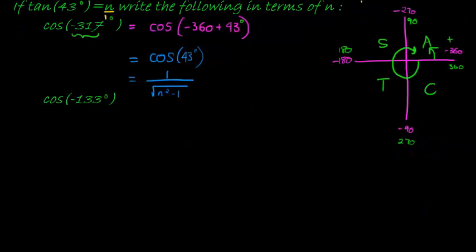Okay, so in the last one, we have cos of negative 133. And in which quadrant is that? Well, that would take us to negative 90, negative 180. So it's not really at negative 180. It's somewhere in here, in the third quadrant.